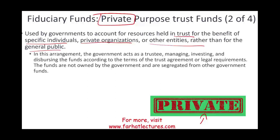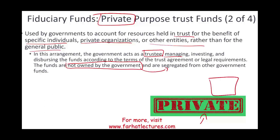In this arrangement, the government is working as a trustee. Rather than having a lawyer or your own entity, you say you want the government to maintain this for you. The government manages, invests, and disperses the funds according to the terms of the legal agreement. These funds are not owned by the government — they belong to the wealthy individual who set them up. They are kept separate from any other government funds, which is why we track them in a fund called the private purpose trust.